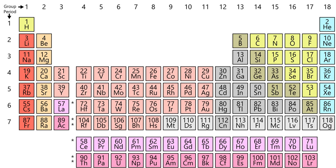Of these 118 elements, 94 occur naturally on Earth. Six of these occur in extreme trace quantities: technetium, atomic number 43; promethium, number 61; astatine, number 85; francium, number 87; neptunium, number 93; and plutonium, number 94.